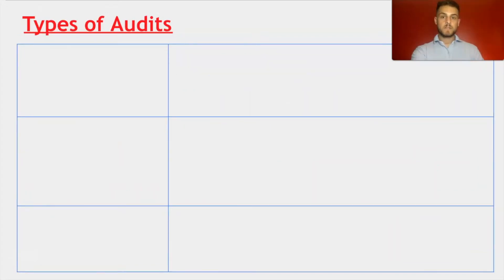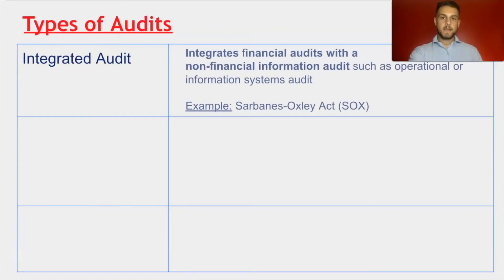Moving on to additional types of audits, starting with an integrated audit. An integrated audit typically integrates financial audits with a non-financial information audit. An example of this would be the Sarbanes-Oxley Act, as it integrates financial audit with IS audit.